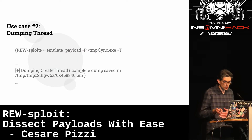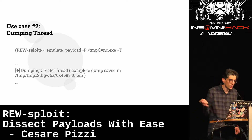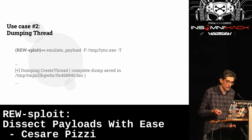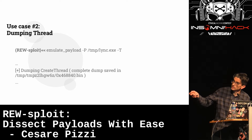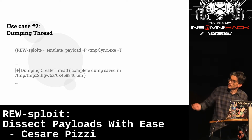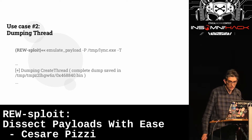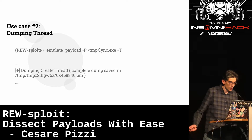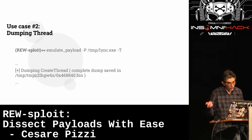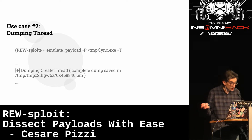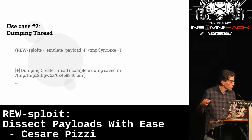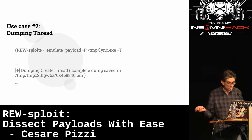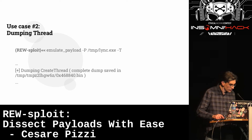Other use cases include thread dumping. There's a '-t' option in the emulate command: when it finds a CreateThread call, it dumps it into a binary file that you can analyze later.